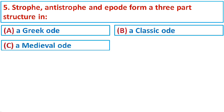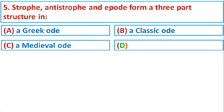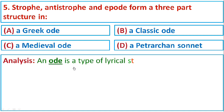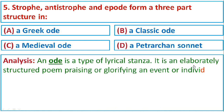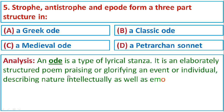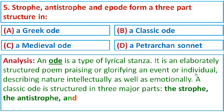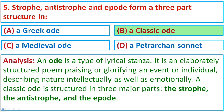Question number five concerns the ode. An ode is a type of lyrical stanza — an elaborately structured poem praising or glorifying an event or individual, describing nature intellectually as well as emotionally. A classic ode is structured in three major parts: the strophe, the antistrophe, and the epode. The correct option is B: a classic ode.